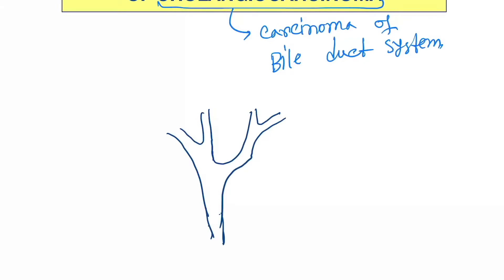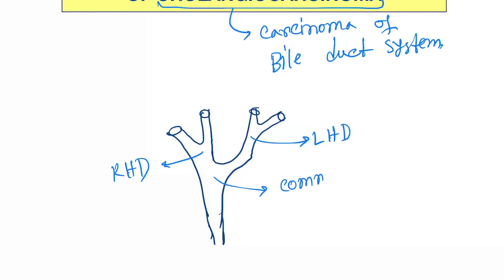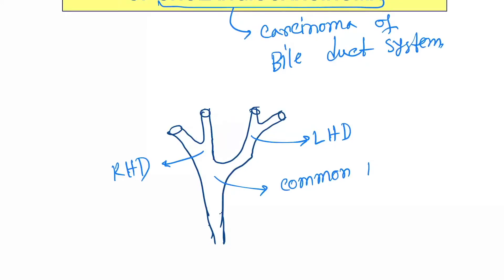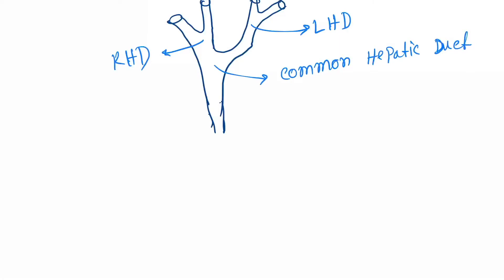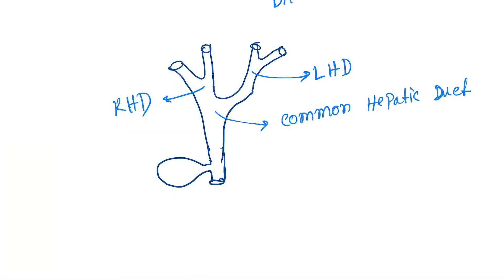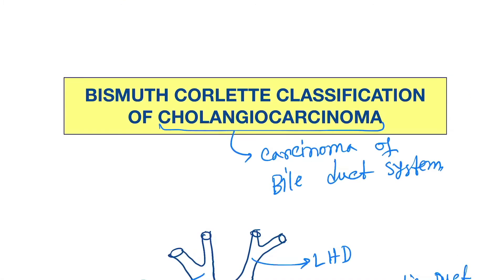This is the bile duct system. This is the left hepatic duct, this is the right hepatic duct, and this is the common hepatic duct. From here, this is the gallbladder. In the Bismuth-Corlette classification, there are five classifications of cholangiocarcinoma.